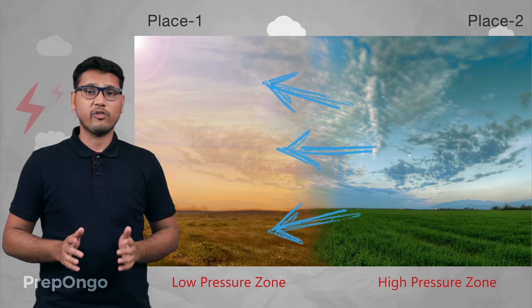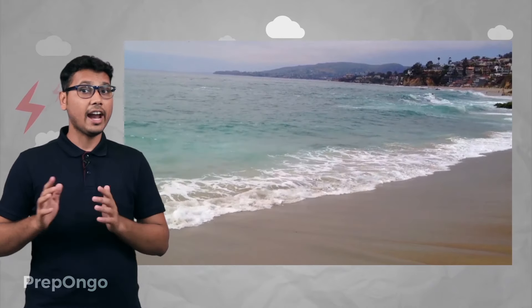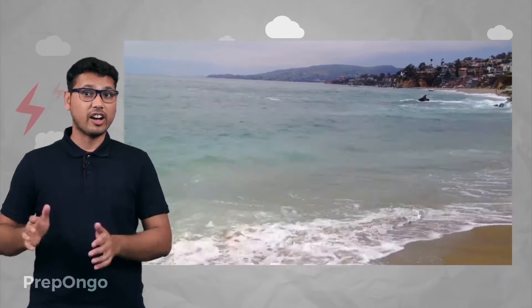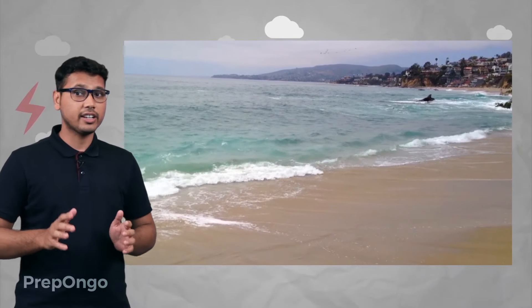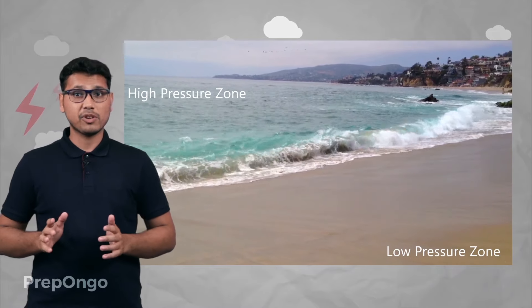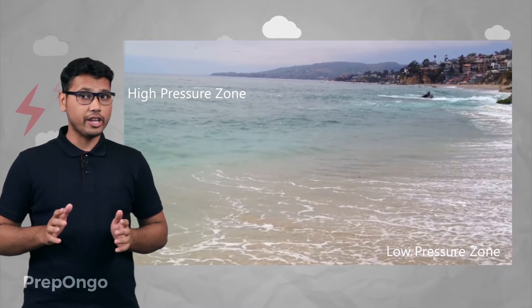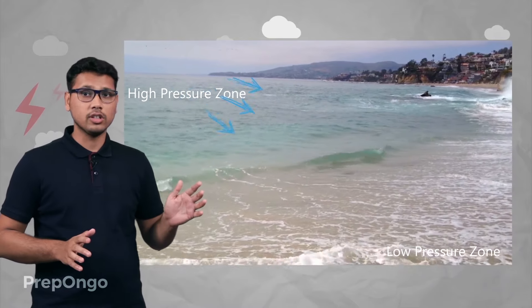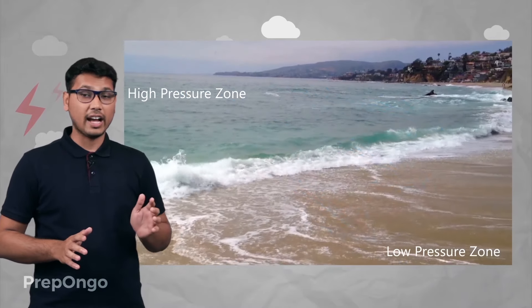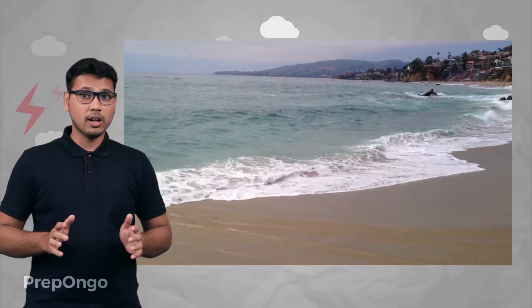So the air from the high pressure zone rushes towards the low pressure zone, and hence wind is formed. This effect is very prevalent near the shores. The land gets heated up at a much faster rate than the sea, and hence a low pressure zone is created on the land and a high pressure zone on the sea. So air starts flowing from the sea to the land. This happens in the morning.